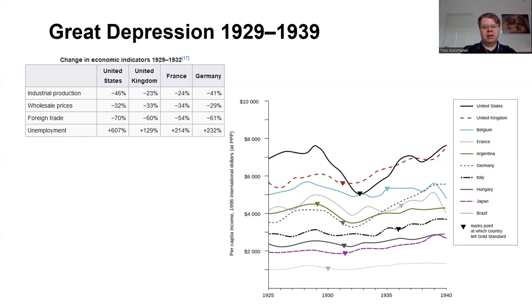Policymakers at that time didn't have a very clear idea of what was happening in the economy. There were rough measures, but there was no such thing as GDP to give an overall view of aggregate demand and supply. Perhaps these deficiencies in measurement also led to somewhat ineffective policy decisions in many countries, making the depression even deeper than it could have been otherwise.